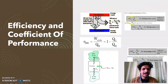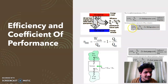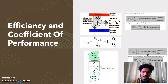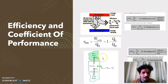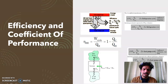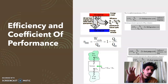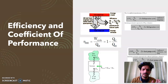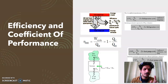So, COP of a refrigerator (coefficient of performance) equals the desired effect Q_in divided by W_cycle, which simplifies to Q_in / (Q_out − Q_in). Similarly, for a heat pump, if you want to calculate COP, the desired effect is Q_out, so COP of heat pump equals Q_out / W_cycle, which simplifies to Q_out / (Q_out − Q_in). To summarize: efficiency is used for a heat engine only, but for a refrigerator and a heat pump, the performance parameter used is the Coefficient of Performance.